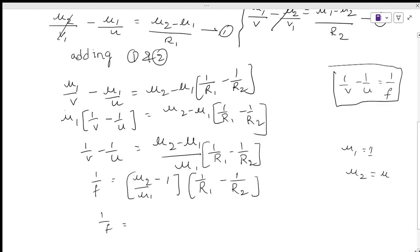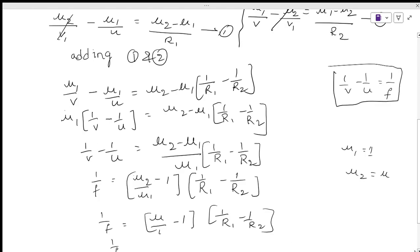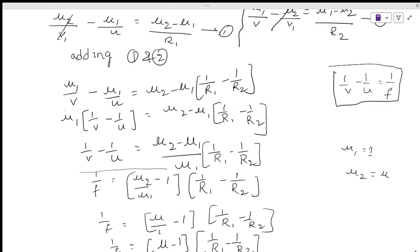The lens maker formula is: 1 by f equals mu minus 1 into 1 by R1 minus 1 by R2. Here, f is the focal length, mu is the refractive index of the lens, R1 is the first radius of curvature, and R2 is the second radius of curvature. If both refractive indexes are given, use mu2 by mu1 minus 1 into 1 by R1 minus 1 by R2.